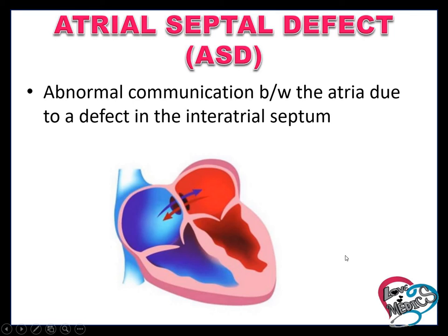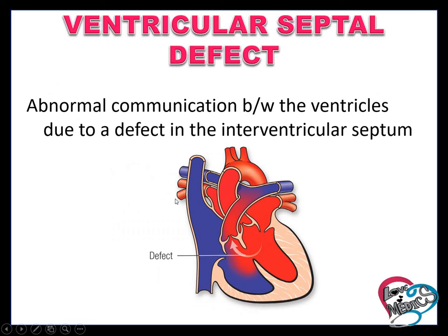Atrial septal defect (ASD) means an abnormal communication between the two atria due to a defect in the interatrial septum. Ventricular septal defect (VSD) is an abnormal communication between the two ventricles due to a defect in the interventricular septum.